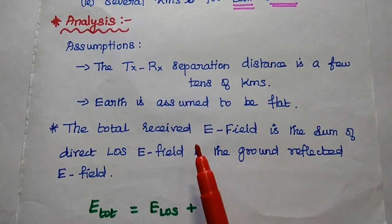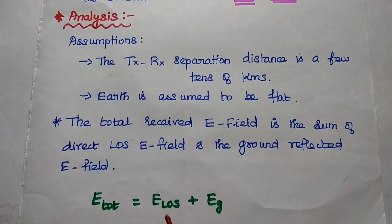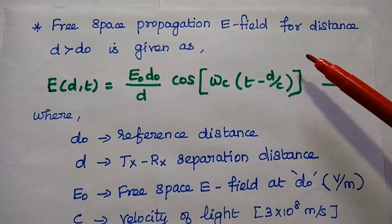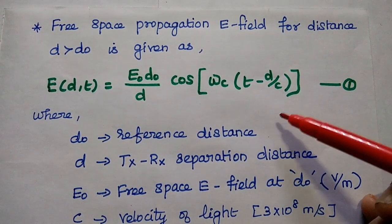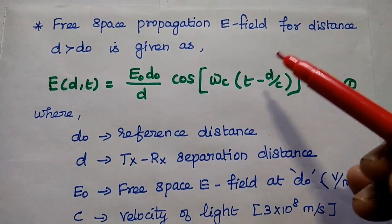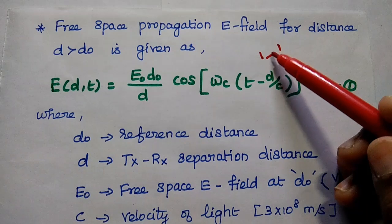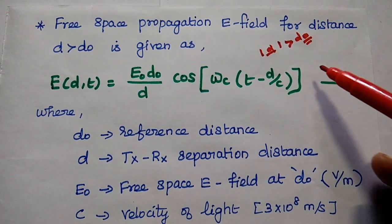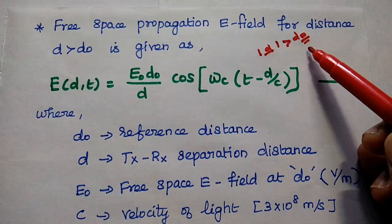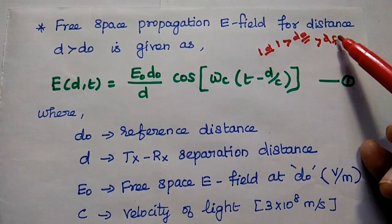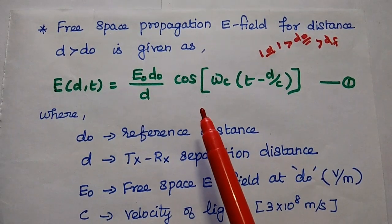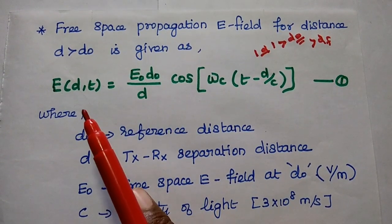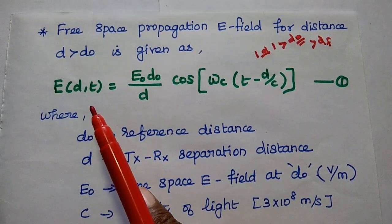The total received electric field is nothing but the sum of the line-of-sight electric field and the ground reflected electric field. Next, we consider the free space propagation electric field for the distance d greater than d-naught. Here the distance between the transmitter and receiver is d, which should be greater than the reference distance d-naught. This reference distance should always be greater than the Fraunhofer distance.